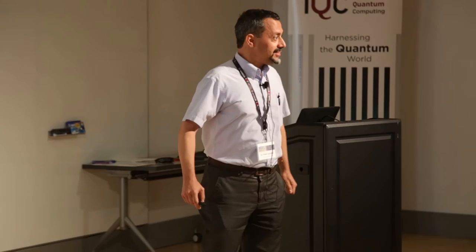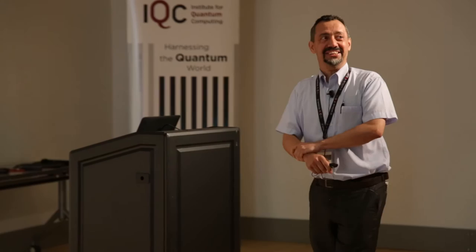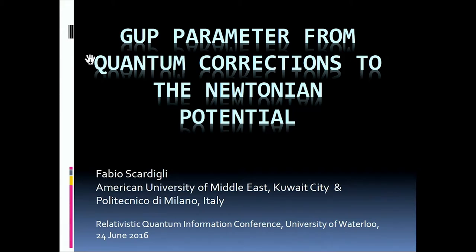Okay, so thanks a lot to the organizers for the possibility to give a talk here. I'm the person between you and the ice cream, so I will try to be fast. I want to tell you about the possibility to compute the GUP parameter. GUP is a generalized uncertainty principle parameter using the quantum correction to the Newtonian potential.